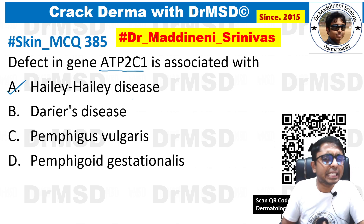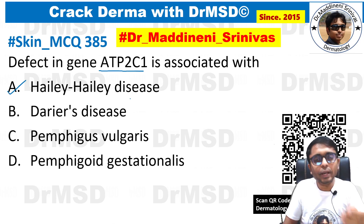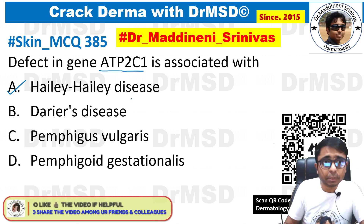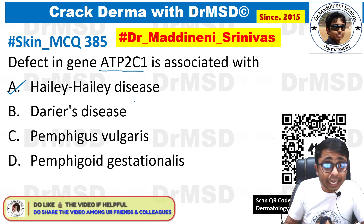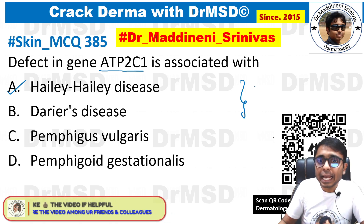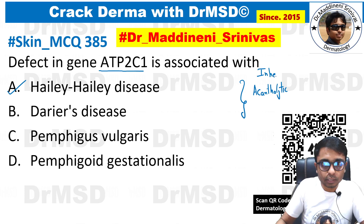We will see each of these options briefly, just a quick brush up of your concepts. Hailey-Hailey disease and Darier's disease — I hope you all remember — these are vesiculobullous disorders, and both of these are inherited acantholytic disorders.